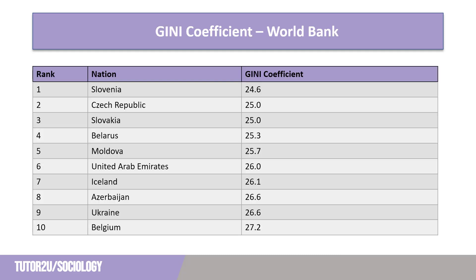Another economic measure is the Gini coefficient, named after Italian economist Corrado Gini. It looks at inequality in a nation and allocates a score out of 100 for inequality in society, with 100 being the most unequal, while lower scores show greater equality. Formerly communist states including Slovenia, Slovakia, Czech Republic, Belarus, Moldova, Ukraine and Azerbaijan all feature in the top ten most equal nations. In comparison, South Africa is the most unequal society in the Gini coefficient rankings, with a score of 63.